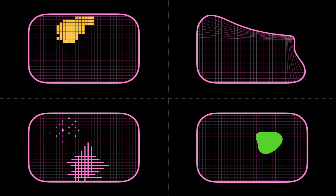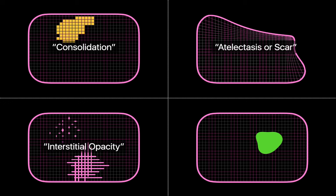The label we use for the first situation is consolidation. We label the second situation atelectasis when it's reversible, and scar or fibrosis when it's not reversible. We label the third situation as an interstitial opacity. And we label the fourth situation as a nodule or a mass, depending on whether it's smaller or larger than three centimeters.